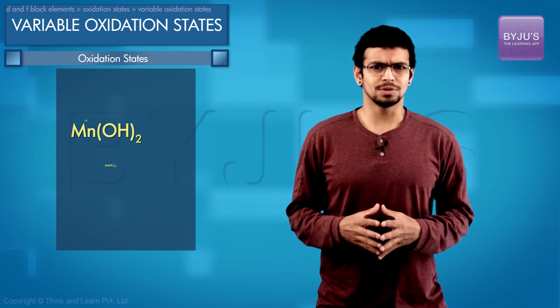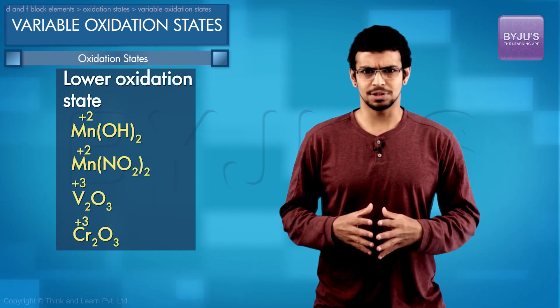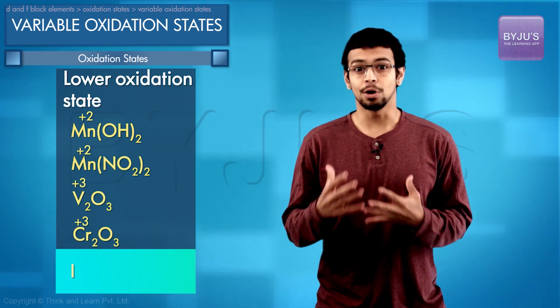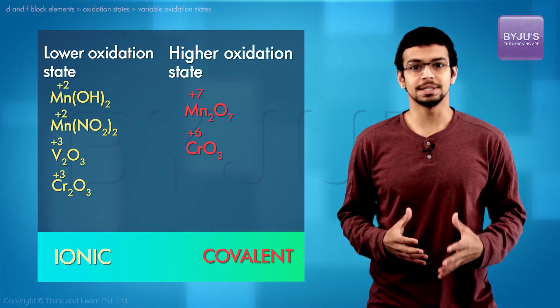The compounds of elements in the lower oxidation state tend to be ionic. The higher ones are predominantly covalent in nature.